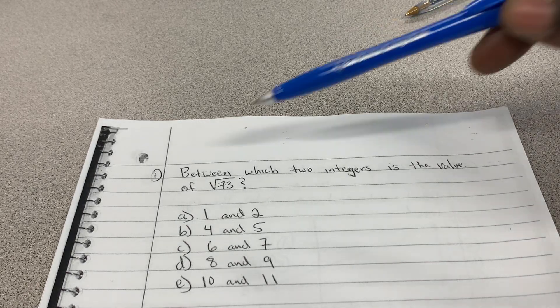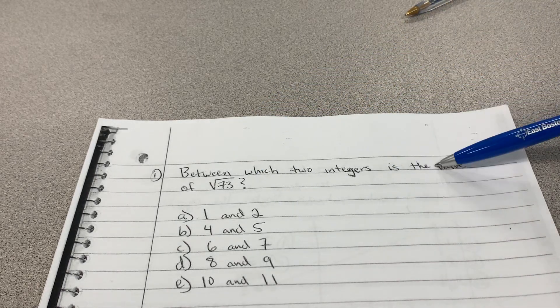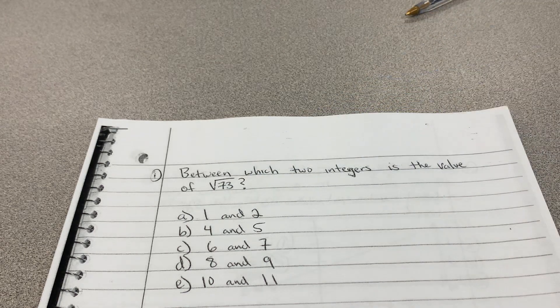Okay, for number one, it says between which two integers is the value of square root 73.